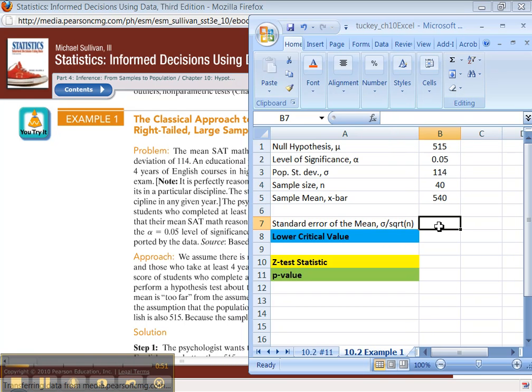So the first thing you've got to do is find the standard error, which is sigma, which is this cell right here, divided by the square root of sample size, which is that cell. Here we go.